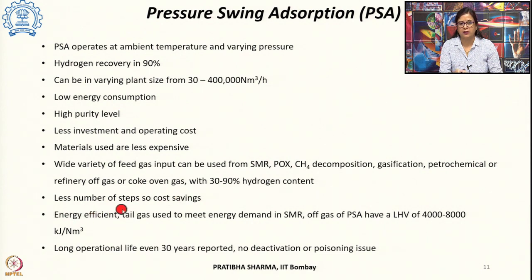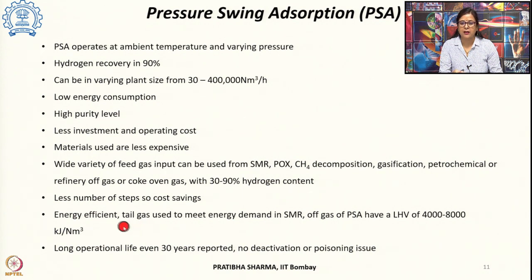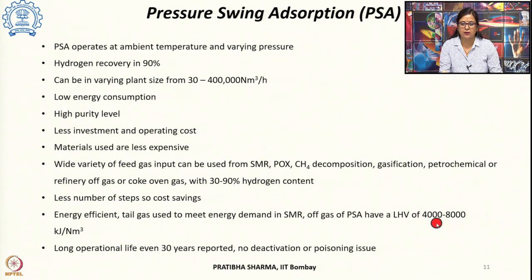Compared to the carbon dioxide removal method, since fewer steps are involved, the cost saving is higher. The energy efficiency of the process is greater because the tail gas obtained after PSA can be used to meet energy requirements in an SMR plant. This off gas has a lower heating value of 4,000 to 8,000 kJ per normal meter cube. The operational life is high — up to 30 years has been reported.